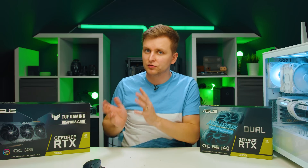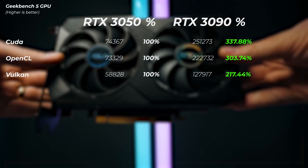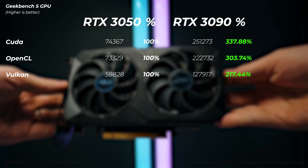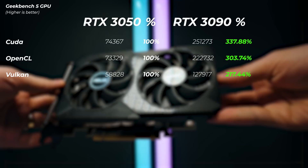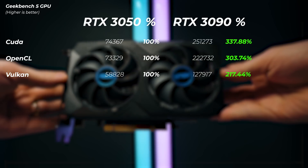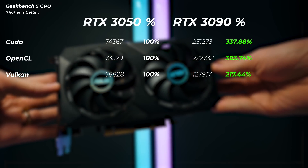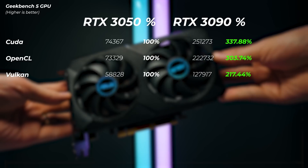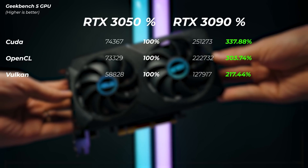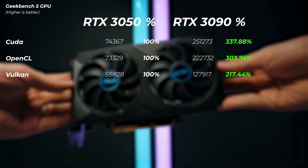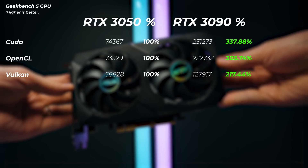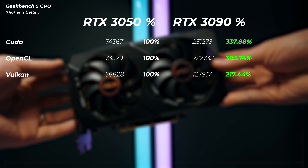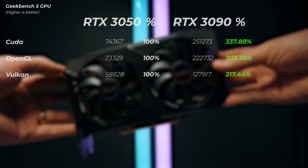In Geekbench 5 GPU benchmarks: the RTX 3090 is 337% better than the RTX 3050 in the CUDA score, 303% better in OpenCL, and 217% better in the Vulkan score — roughly two to 3.3 times better overall in that benchmark.